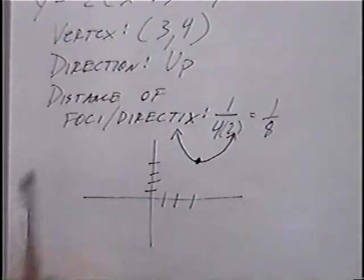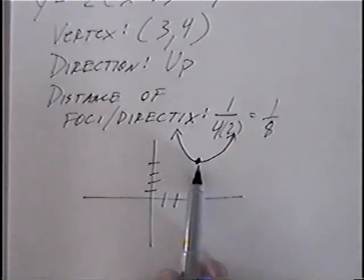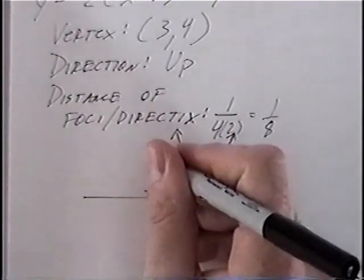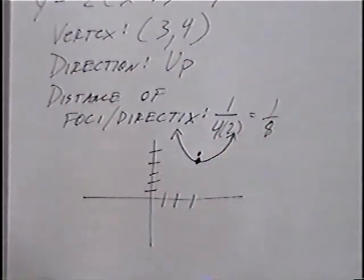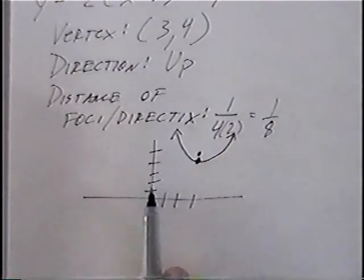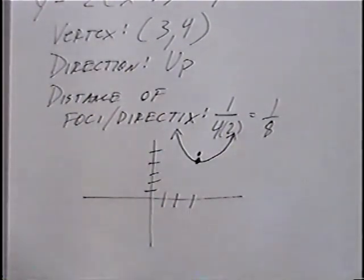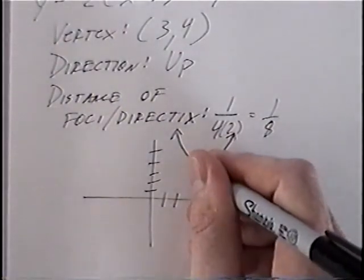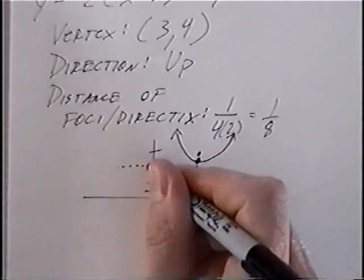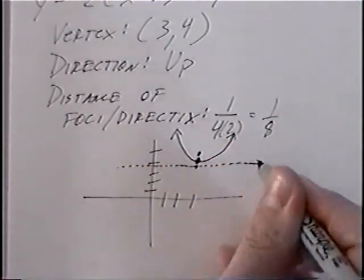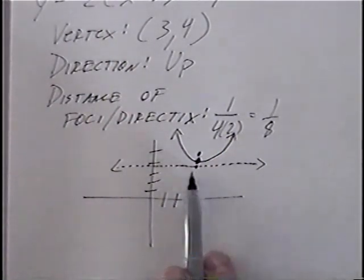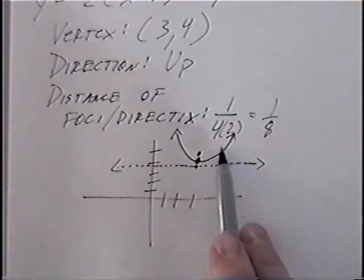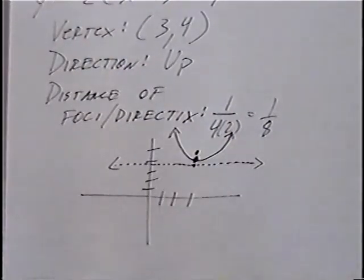For the foci and directrix, the foci is a point inside the parabola. 1/8 means from the vertex we'll go up the fraction 1/8 and put a single point. For the directrix, it's a dashed line underneath the parabola or outside, and again this distance would be 1/8 down. We'll draw a dashed line 1/8 down from the parabola. The definition of the foci and directrix is that any point on the parabola is the same distance from the foci as it is from the directrix. And that would be the graph for the equation.